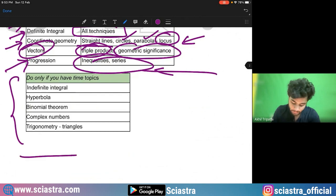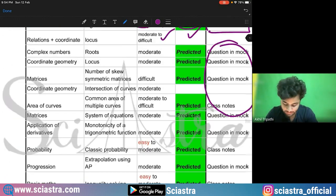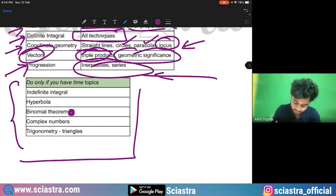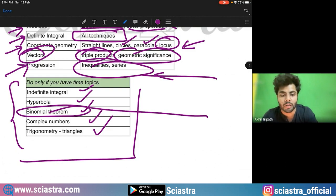Coming to the chapters which are less important, question might come from here, but these are less important and less probable. Last time last year a question came from binomial theorem. If you see here in the analysis I had told you. So these are the less important topics and chapters: definite integral, hyperbola, binomial theorem, complex numbers, trigonometry. However question might come, for example from binomial theorem question can come, but the probability is less. That's what I'm saying.